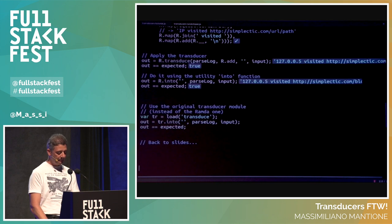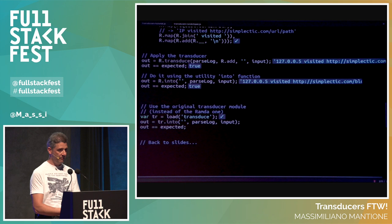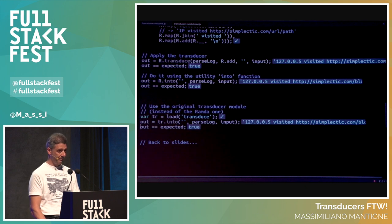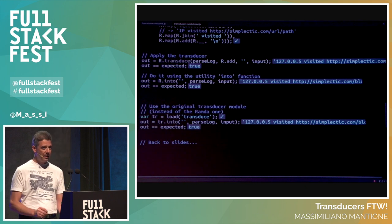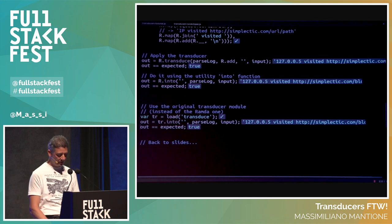A nice thing: we built this function with Ramda. We can load another transduce implementation — the original one — and invoke its own version of transduce with our Ramda-built parser, and it still works. Essentially, you build code with one library and use it with another. They are totally compatible because the interface is so simple that interoperability is easy.